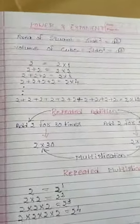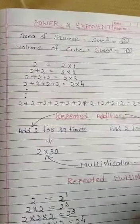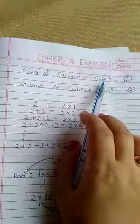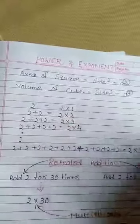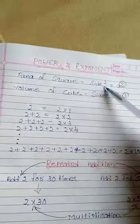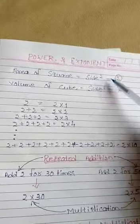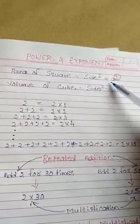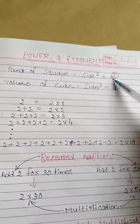For a start, Power and Exponent — everyone knows that is Area of Square. Area of Square is equal to Side squared. That means in a square, all sides are equal. So Area of Square equals that side multiplied two times. Just one example: if the side is A, then the area is A squared.